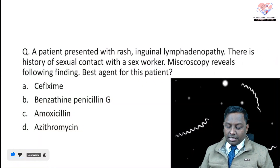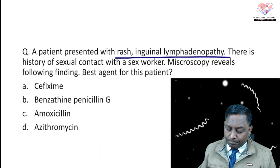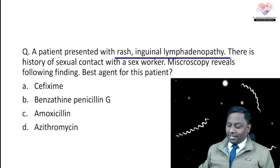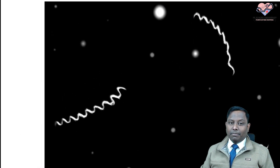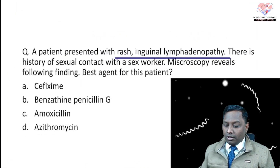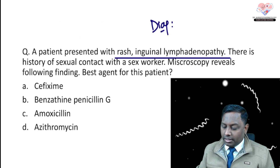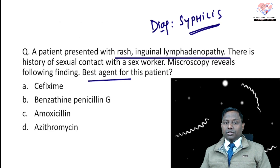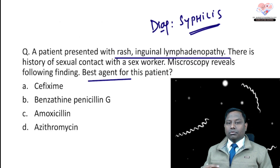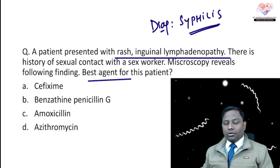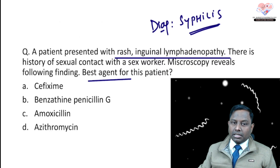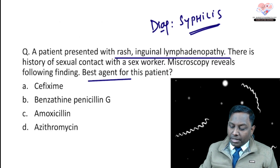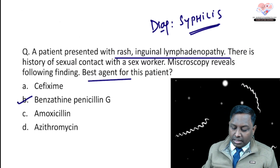The first question today is about a patient with a rash, inguinal lymphadenopathy, and a history of sexual contact with a sex worker. As soon as you see this image on dark field microscopy showing the corkscrew pattern of the organism — one of the spirochetes — the diagnosis is syphilis. The examiner is asking for the best agent for this condition, now presented as a clinical and image-based question. The best drug for syphilis is benzathine penicillin G.